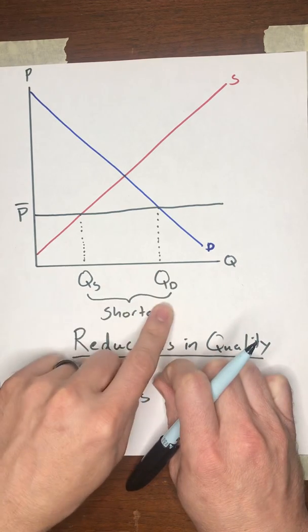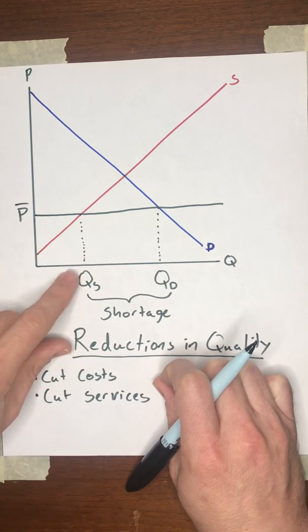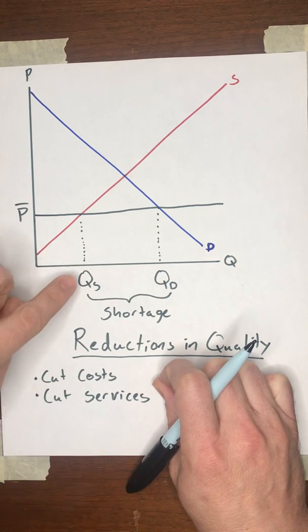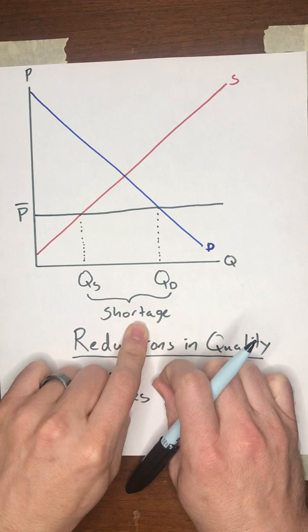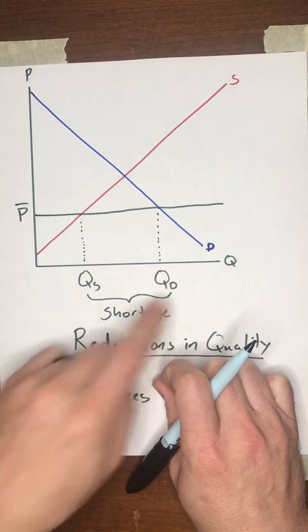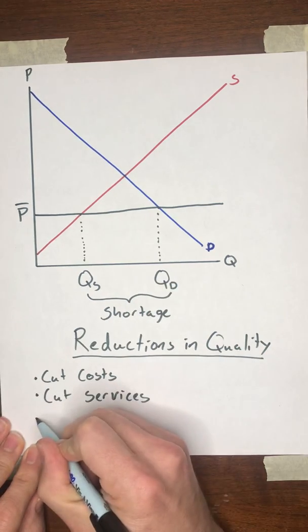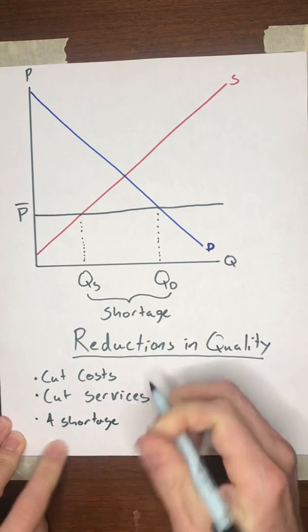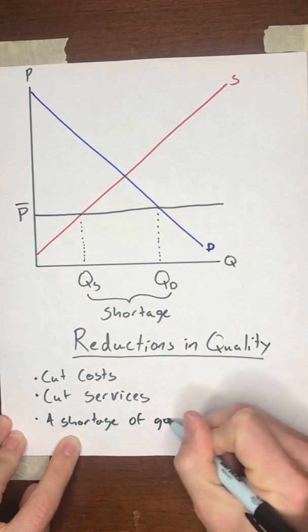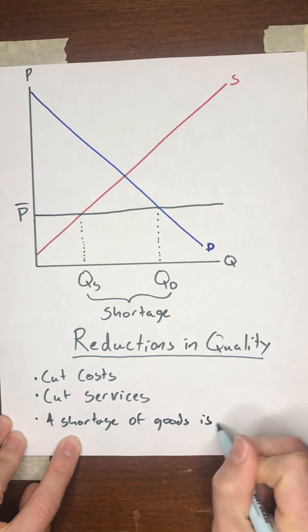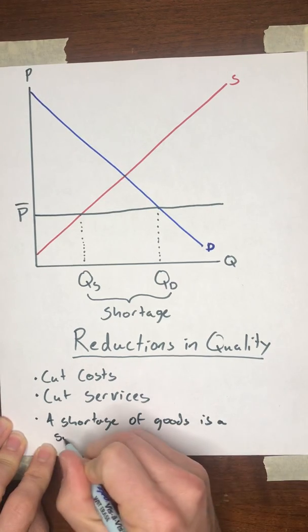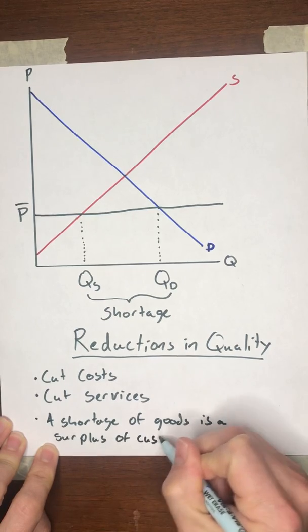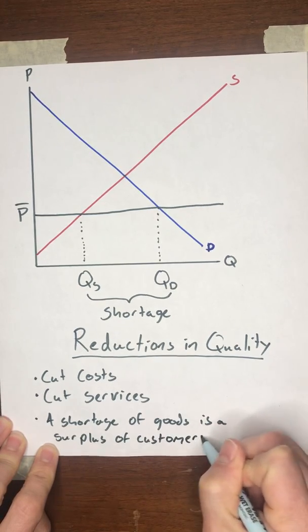From the customer's perspective, that means there aren't enough goods to go around relative to how many they want to buy. But from the seller's perspective, a shortage of goods is a surplus of customers. A shortage of goods is a surplus of customers.